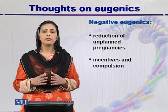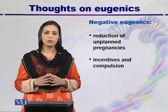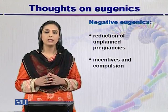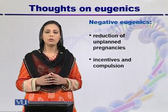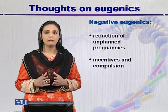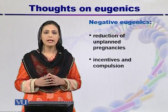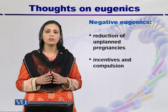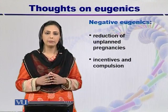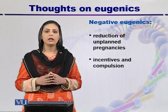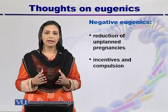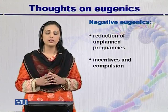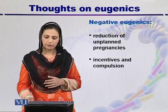The second approach under negative eugenics involves incentives and compulsions. Incentives are given for sterilization, especially for male and female criminals, and also for mentally retarded people who cannot manage independently in adulthood. So sterilization is a very important component here.